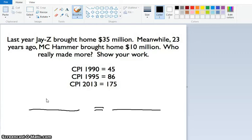Okay, so in the last problem, we know that MC Hammer was doing better off with his $10 million in 1990 compared to Jay-Z's $35 million in 2013.